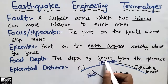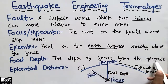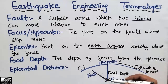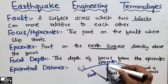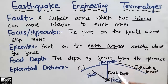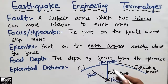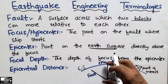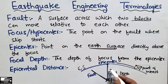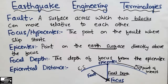Now, focal depth — it is very simple. It is the depth of the focus from the epicenter. This distance from the focus up to the epicenter is known as the focal depth. The focus is inside the earth and the epicenter is directly above on the earth's surface, and the distance between them is the focal depth.